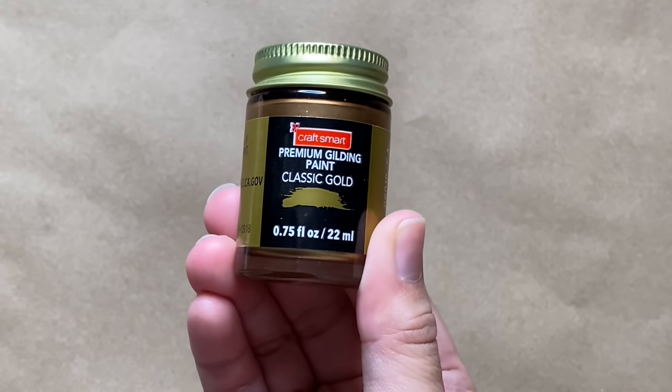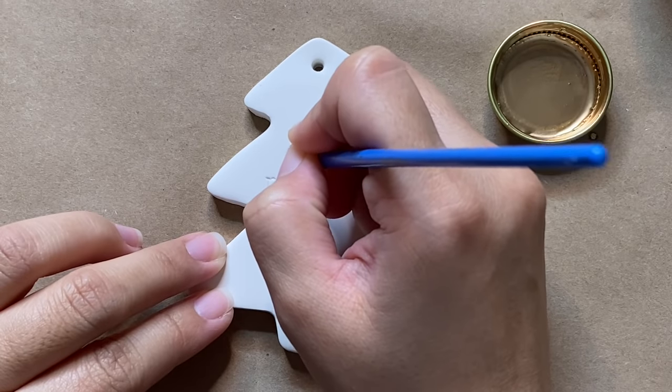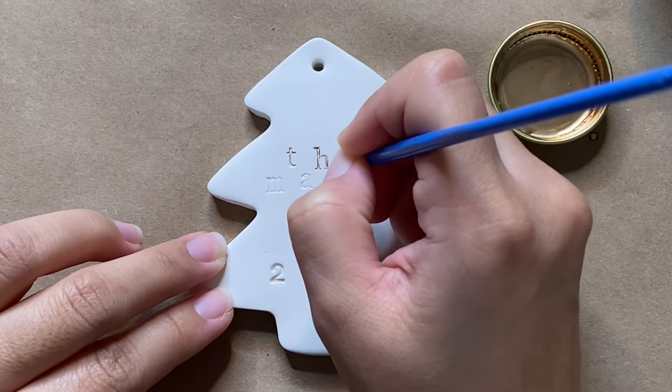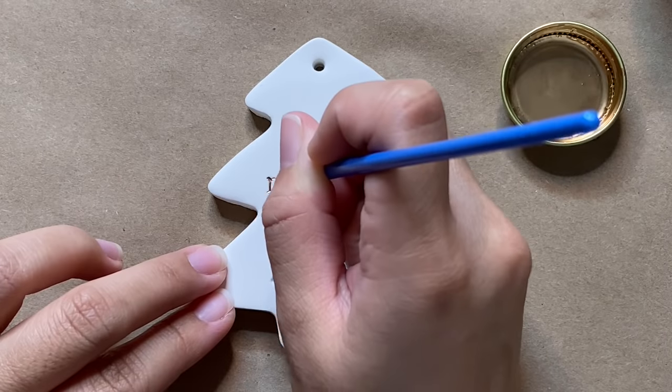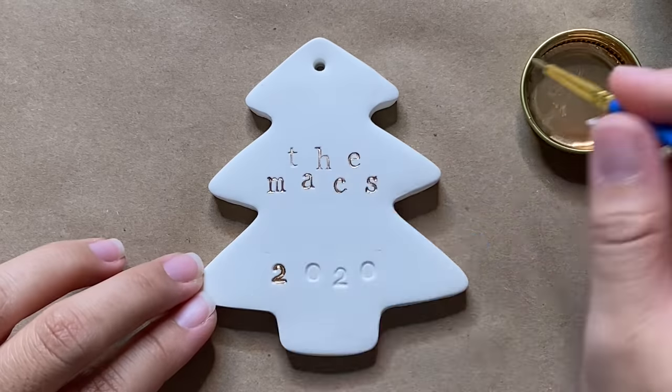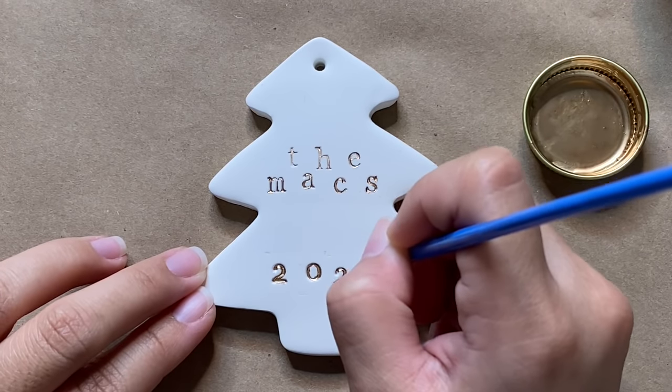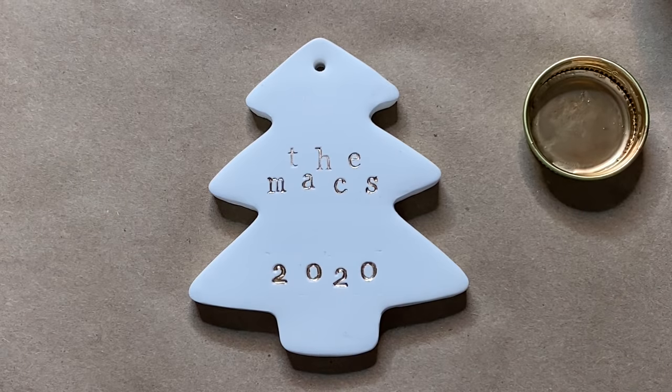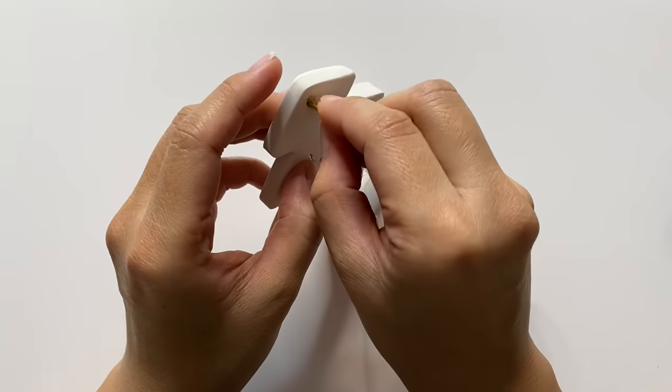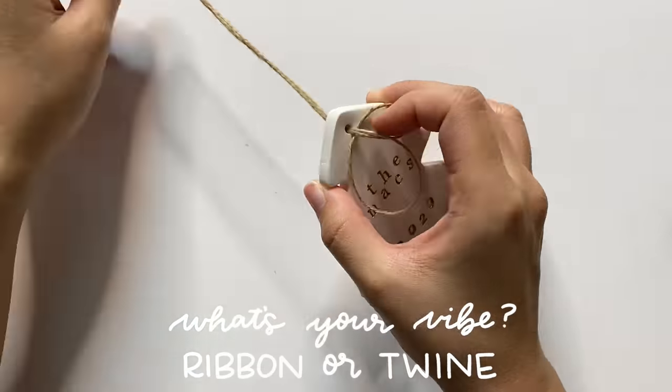You can totally leave them like this for a minimal look, but I wanted to add a little bit more interest, so I'm adding some gold paint to these ones. Here I'm using liquid gold leaf paint with a fine tipped brush. This just works so perfectly to get right in where I stamped everything, and it looks so good with that little added touch of gold.